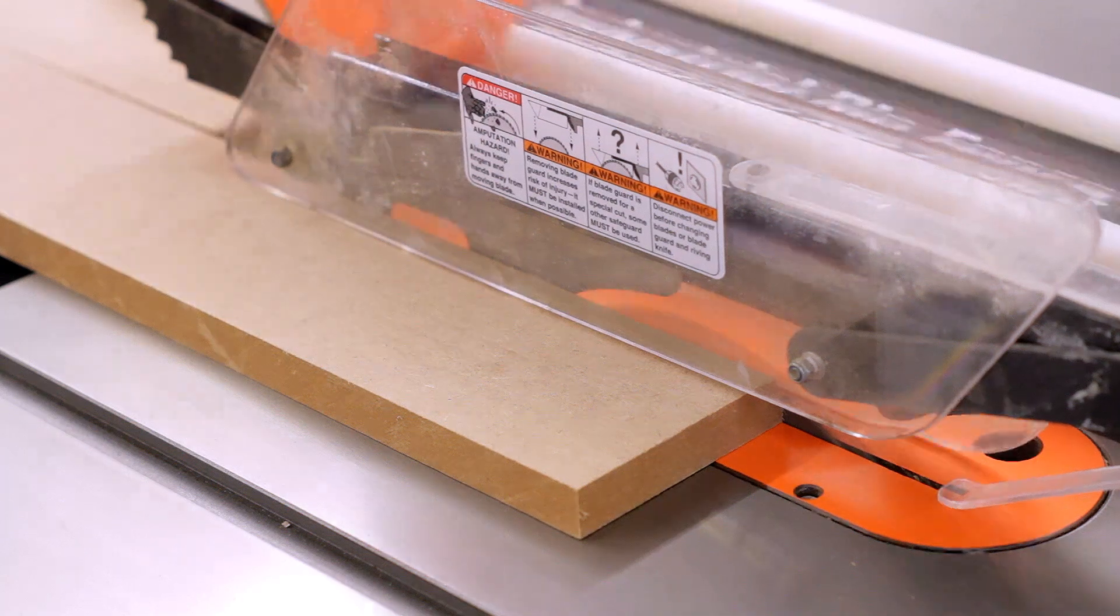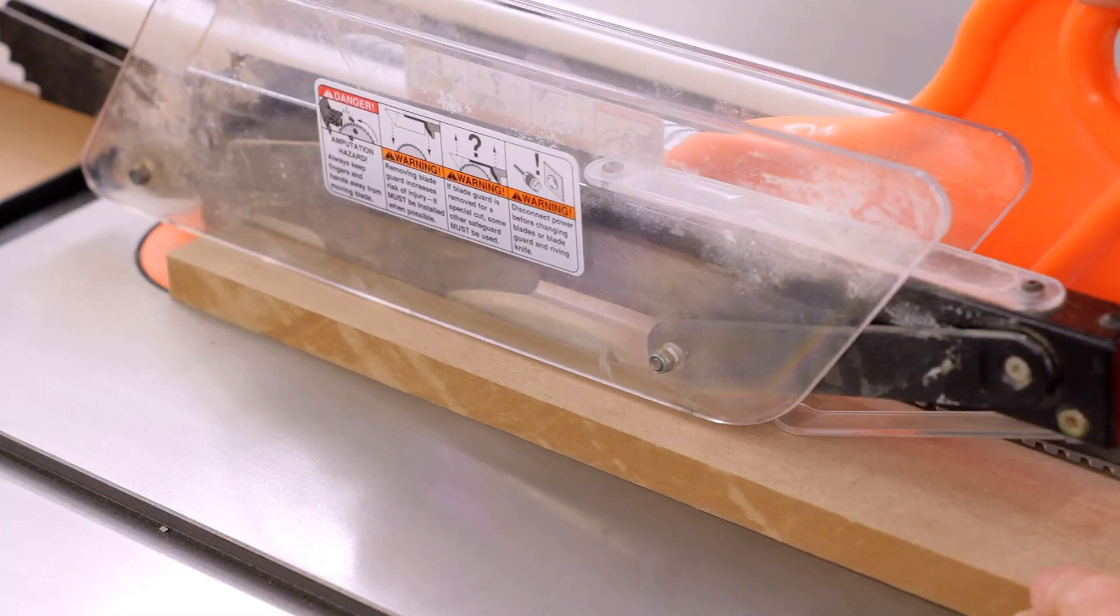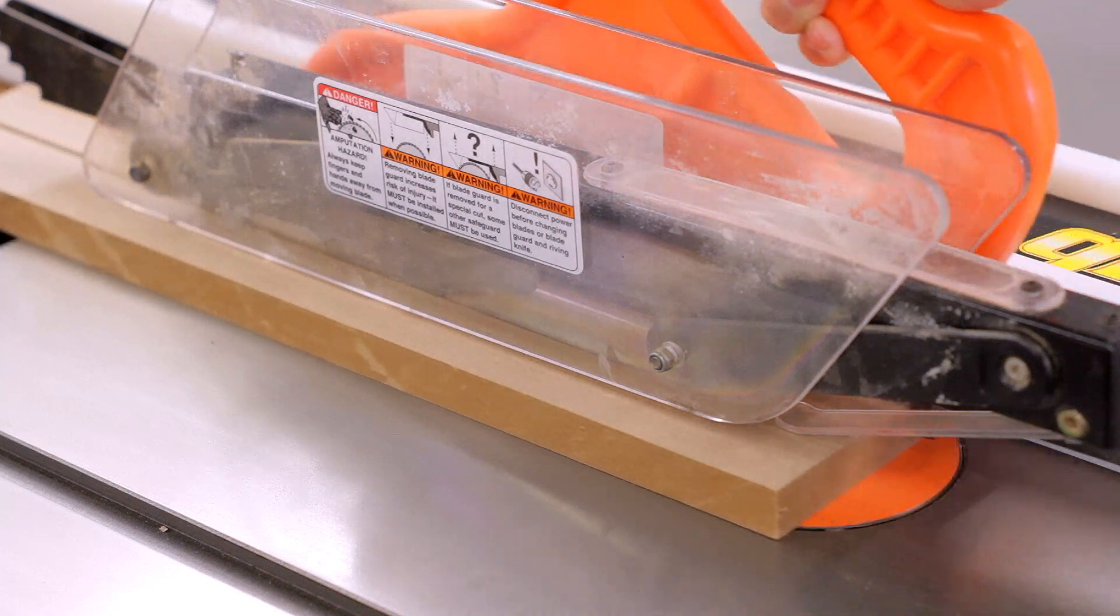This first pair of racks will hold 12 smaller F-style clamps each. I started by cutting pieces of 3 quarter inch MDF to length and width at the table saw.